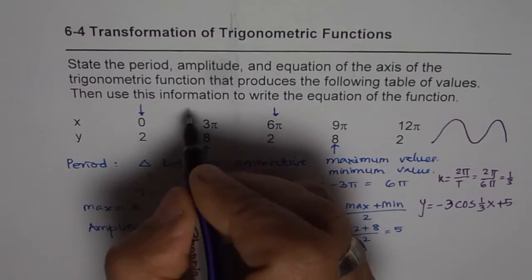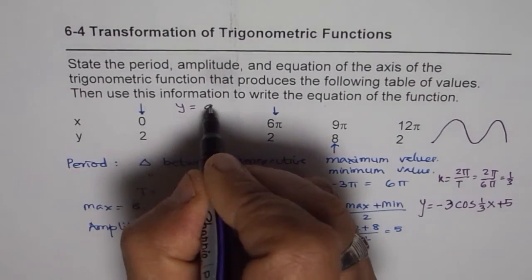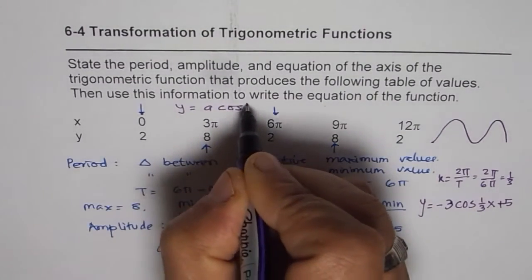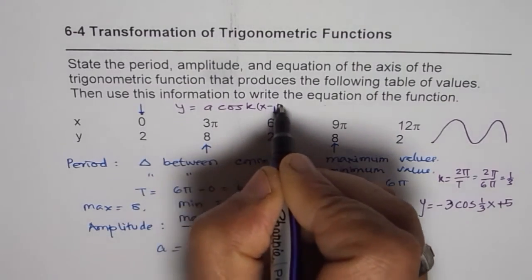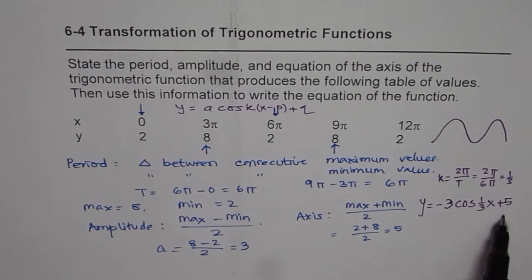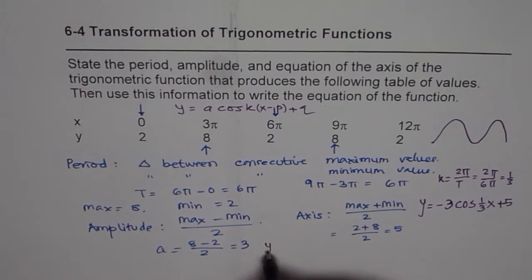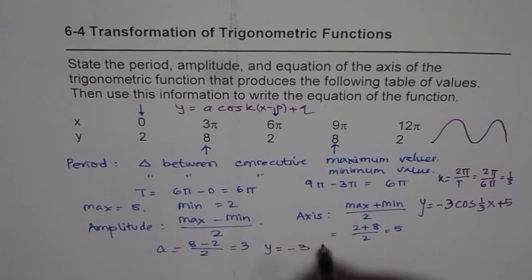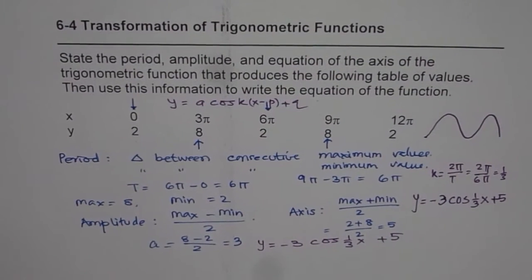The general equation is normally written as y = a·cos(k(x - p)) + q. For our given function, the equation is: y = -3cos(x/3) + 5. That is the answer for the given question.